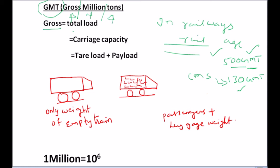Carriage capacity is equal to tare load plus payload. Tare load means the empty weight of the train. Payload means the load for which an amount was paid — for example, passengers who bought tickets. So payload means passengers, luggage, etc., that was inside the train.